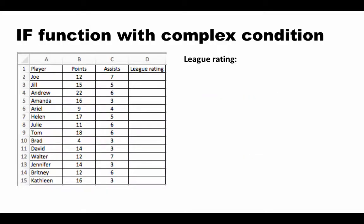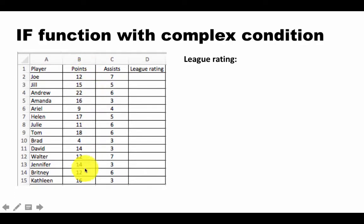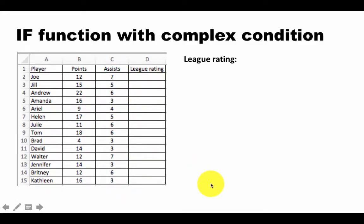Let's take an example. These are all things I've just made up to illustrate this — not necessarily realistic in any sense. I've got a bunch of basketball players, column B tells us how many points each of them scored during a season, and column C tells us how many assists they played a part in during the season. Now I've come up with this thing called league rating — just made up stuff, nothing real — and the league rating for a player is based on a complex condition.